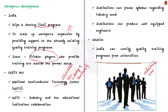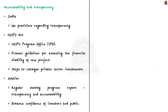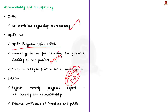The next lesson is regarding accountability and transparency. India currently does not have any provisions to ensure transparency in its semiconductor program. On the other hand, the CHIPS Act has the CHIPS Program Office (CPO), which lays down guidelines for assessing the financial viability of new project proposals and takes steps to catalyze private sector investments. India's semiconductor strategy could benefit from a similar mechanism. A regular monthly progress report on the semiconductor program could be provided, which would instill investor confidence and public support.